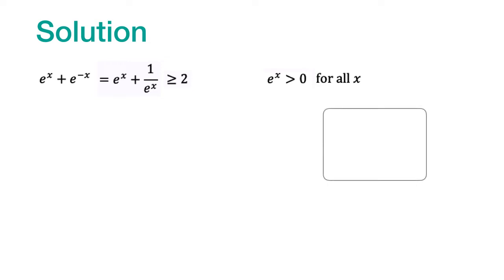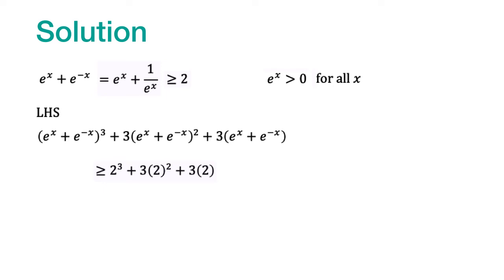We have used this particular inequality - the sum of a number and its reciprocal is always more than 2 for all values of a. Here is the left-hand side of the given equation. We can say that this must be greater than or equal to 2³ + 3(2²) + 3(2), which is equal to 8 + 12 + 6, and that is equal to 26.